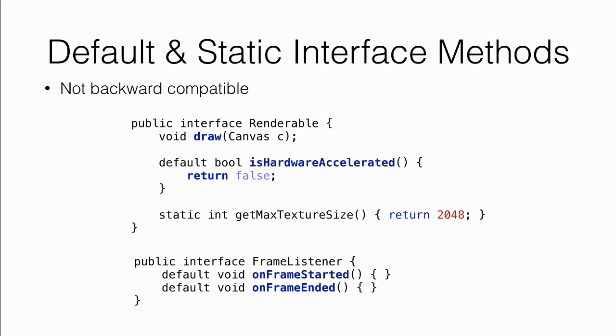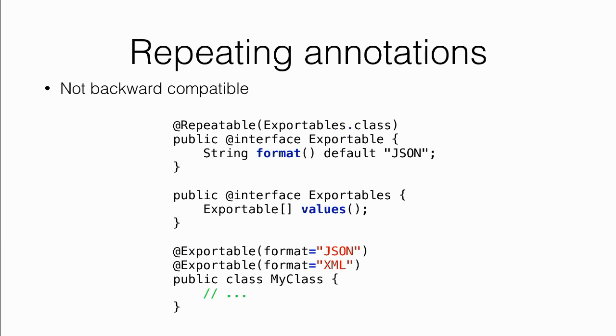Default and static interface methods are two useful Java 8 features, though unfortunately not backward compatible. If you have an existing interface, you can now add new methods and provide default implementations — very much like abstract classes — useful for moving your APIs forward without breaking clients. You can use them to create the famous adapter pattern: a listener with several callback methods but only an empty implementation for each, so you only need to declare the methods you care about. You can also have static methods on interfaces. Repeating annotations — for those using annotation-heavy frameworks — means a single annotation like @Exportable can be written several times on the same type instead of using arrays of values.